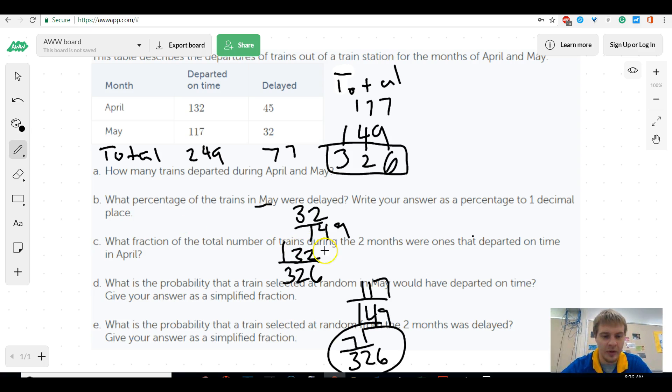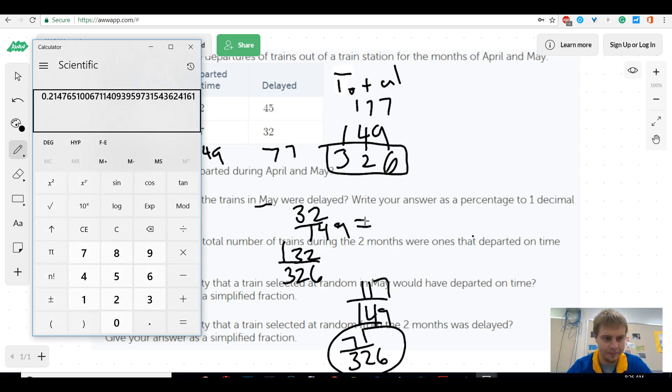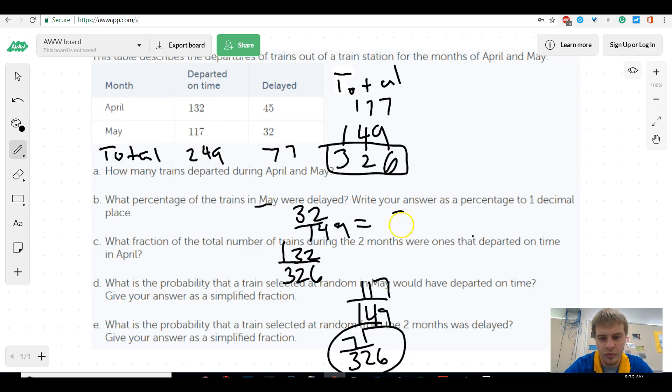This one, if I go back, B, they did not actually want as this fraction. They want it as a decimal, or a percentage as a decimal. So, for this, all you do is 32 divided by 149. And, if you look at this, that's 21.5%. Because, for a percentage, you go two decimal places out, and then everything past there is your actual decimals of your percent. So, this would be 21.5%.